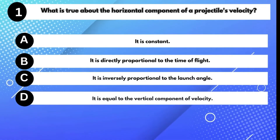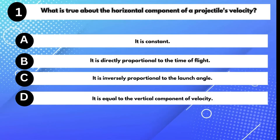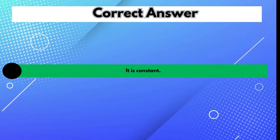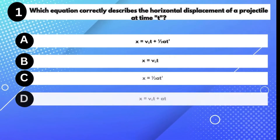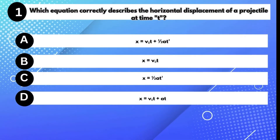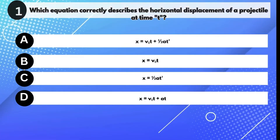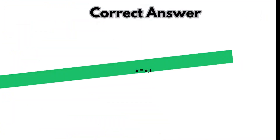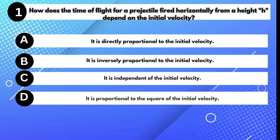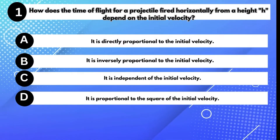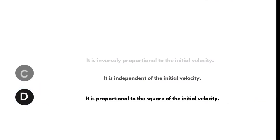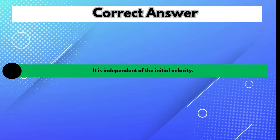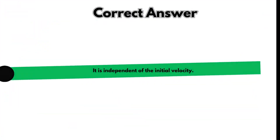What is true about the horizontal component of a projectile's velocity? Answer A: It is constant. Which equation correctly describes the horizontal displacement of a projectile at time t? Answer B: X equals V times T. How does the time of flight for a projectile fired horizontally from a height h depend on the initial velocity? Answer C: It is independent of the initial velocity.